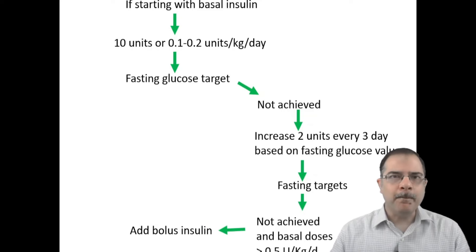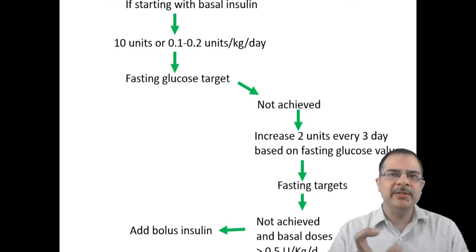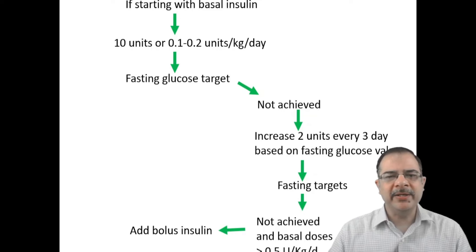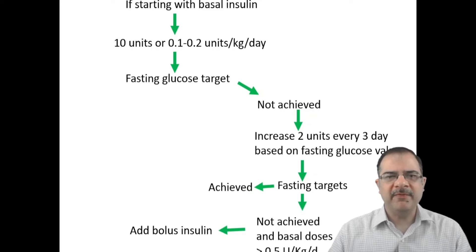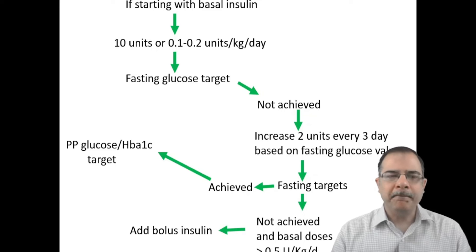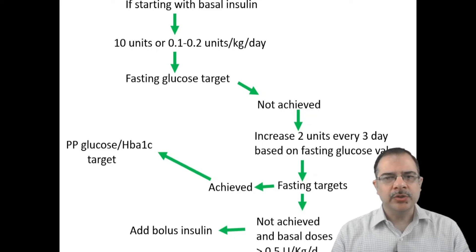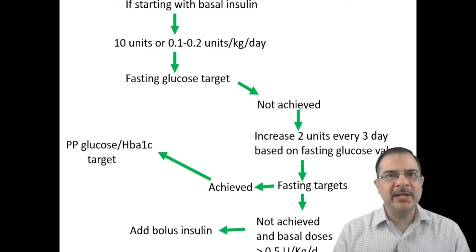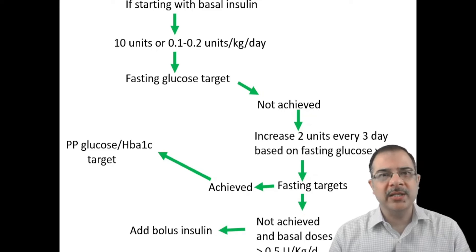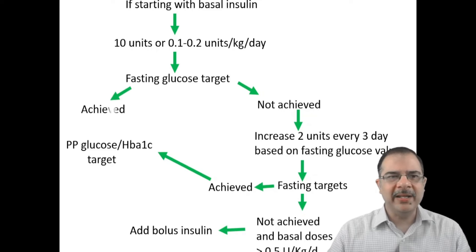If the basal dose requirement is more than 0.5 units per kg per day and fasting targets are still not achieved, we add bolus insulin — that is, rapid-acting or short-acting insulin — to supplement the additive effect of basal insulin. If fasting targets are achieved, we then look at postprandial glucose values and HbA1c targets after three months. If HbA1c remains high despite achieved fasting targets, the postprandial sugars are likely the culprit.